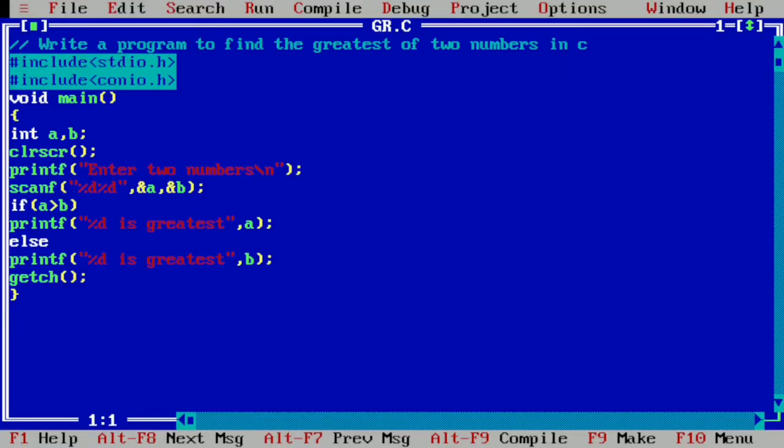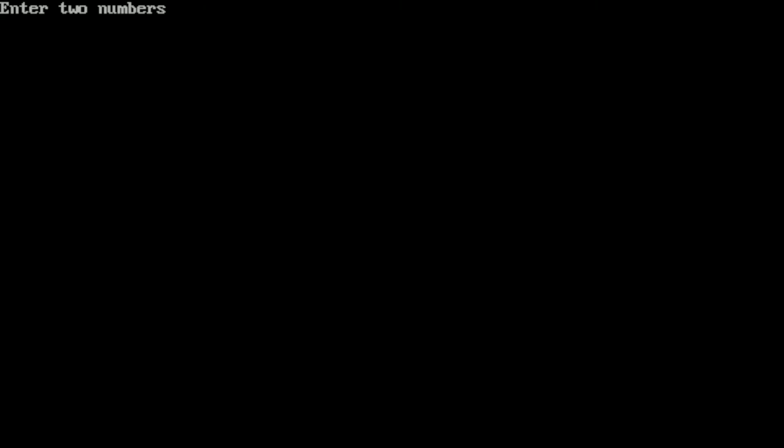Once again we are going to run this program by pressing Ctrl F9. Now I am going to reverse the number. So I am going to write first 10 that is stored in variable A and now I am going to enter 5. This value will be stored in variable B. Now I am going to press Enter. So this time also it is showing 10 is greatest. I hope you understood.